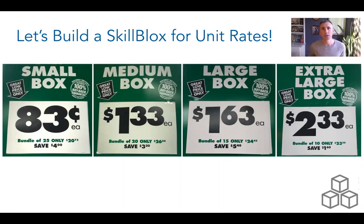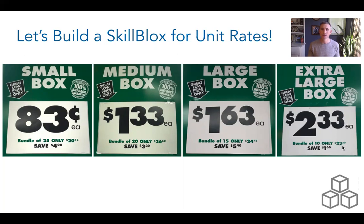Only one person attempted to answer the problem, and the answer is: actually none of these is a deal. I took pictures of these because one said $2.33 each, and a bundle of 10 is only $23.30 — but $2.33 times 10 IS $23.30, so you're saving nothing. I did the math for every single one — none of them is a deal. It says 'save whatever' but you're paying the exact same price per box in each bundle. That's the trick — and this would be a great problem to have students work on.